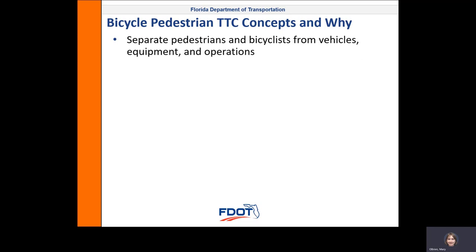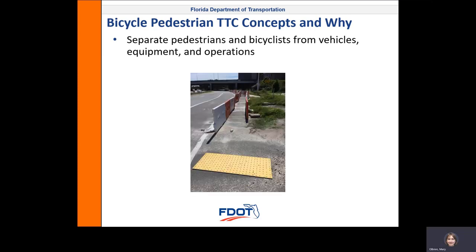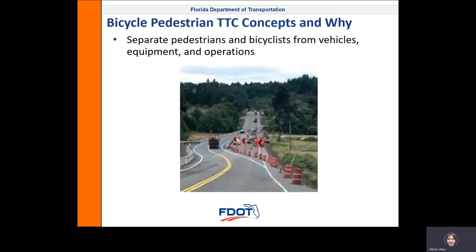Next, separate pedestrians and bicyclists from vehicles, equipment, and operations. Pedestrians are the most vulnerable roadway users in a work zone, so we want to provide them with extra protection by separating them from cars, trucks, construction or maintenance equipment, and work zone operations. Pedestrians are the most vulnerable because they travel slowly, so they are exposed to hazards the longest, they do not have the protection of being in or on a vehicle, and people with visual or mobility or other impairments are often pedestrians. People biking are the second most vulnerable road users. This picture is showing a paved shoulder that is the bicycle facility in this case, and they have the construction equipment in the bicycle facility, which is not what we want to see.